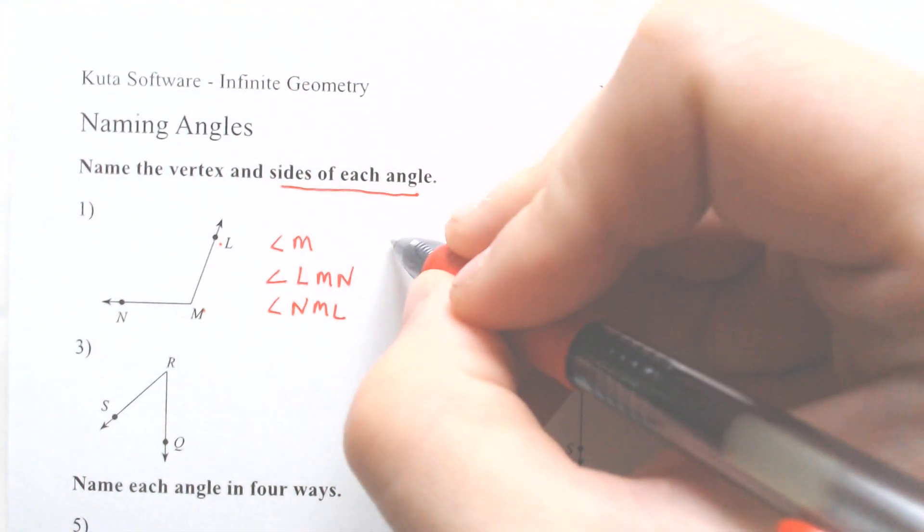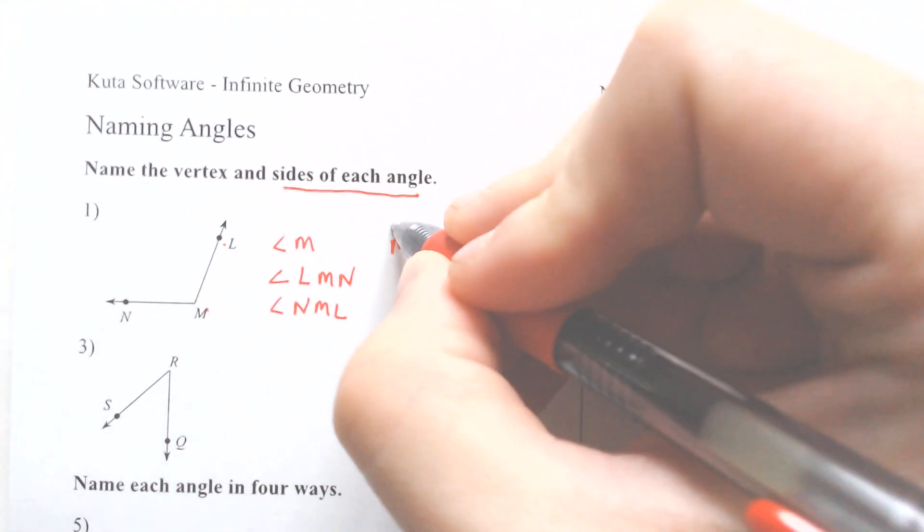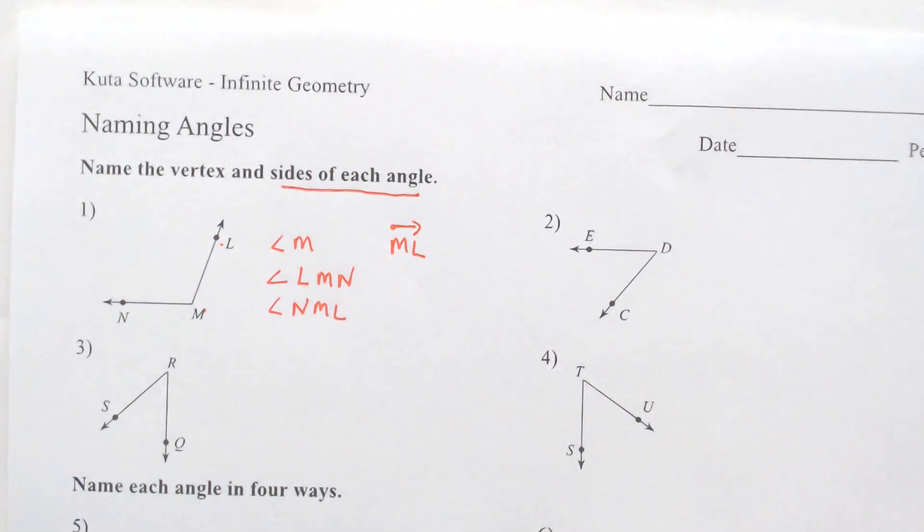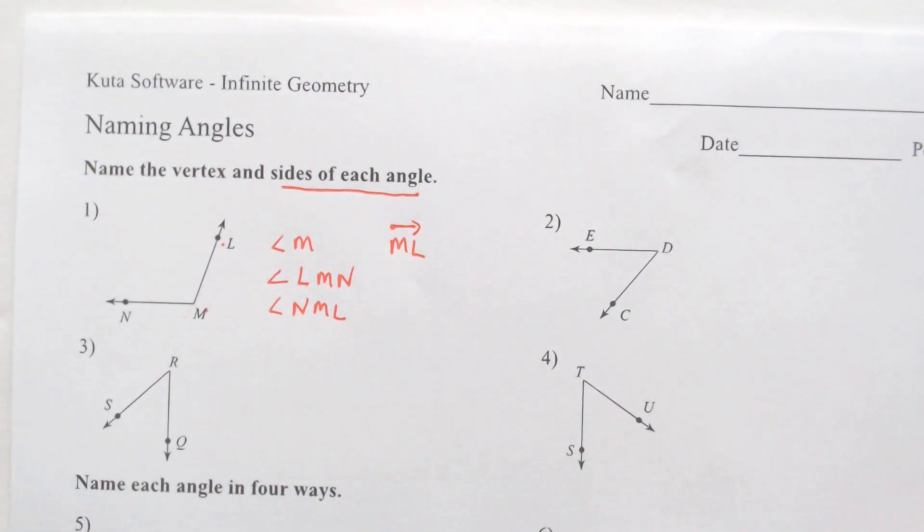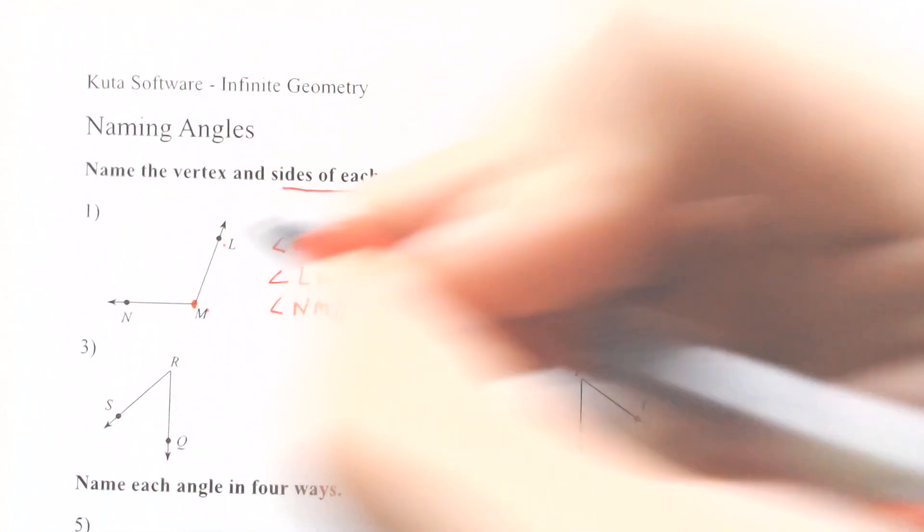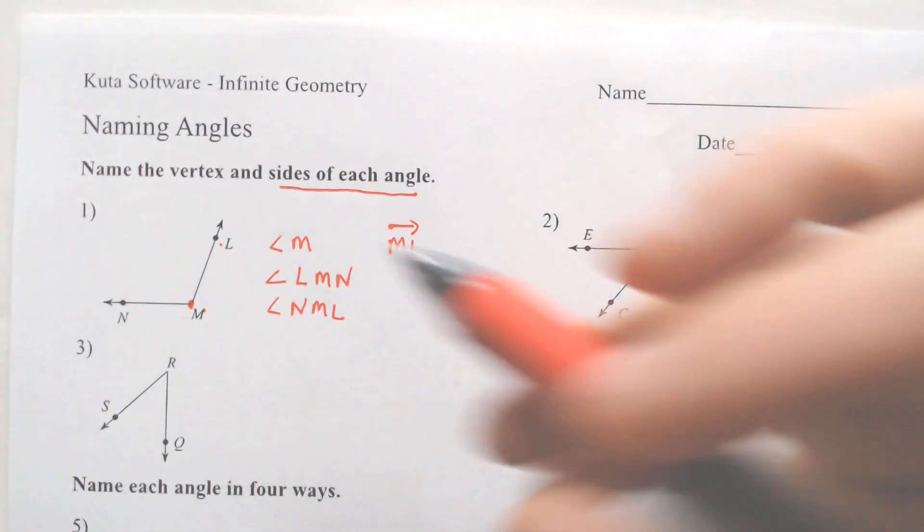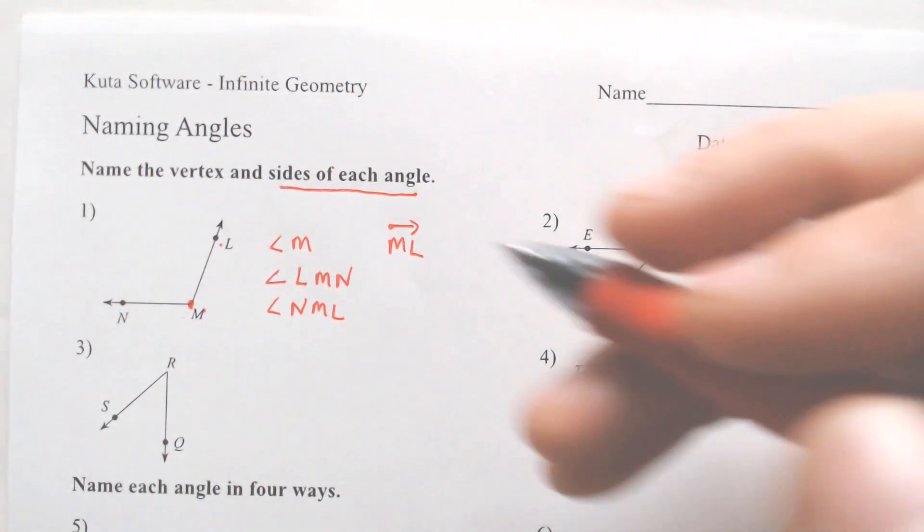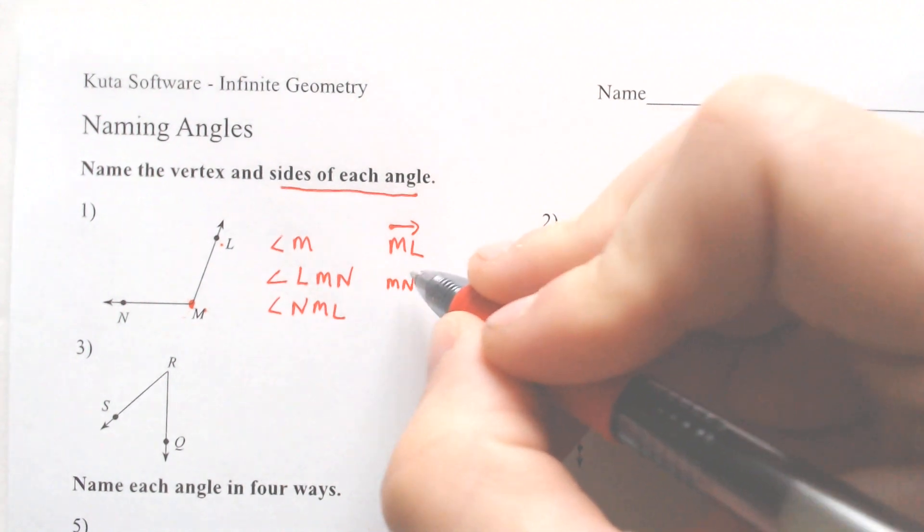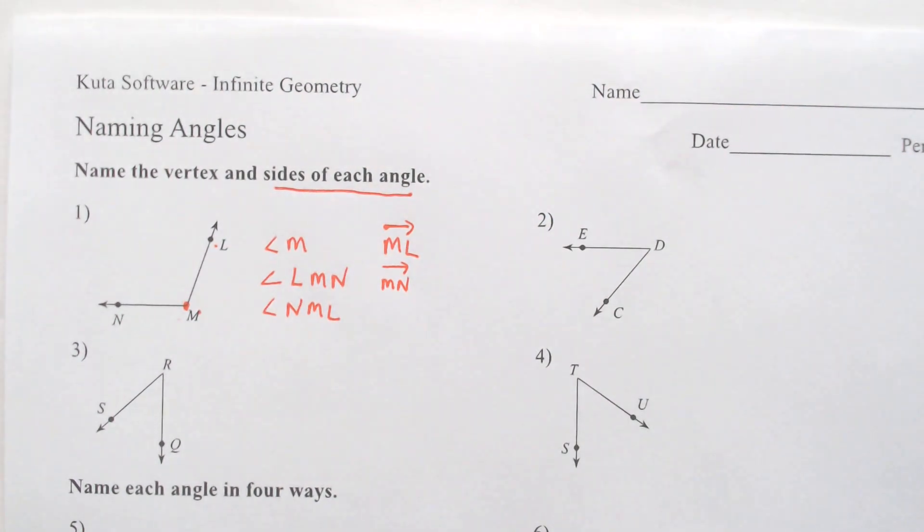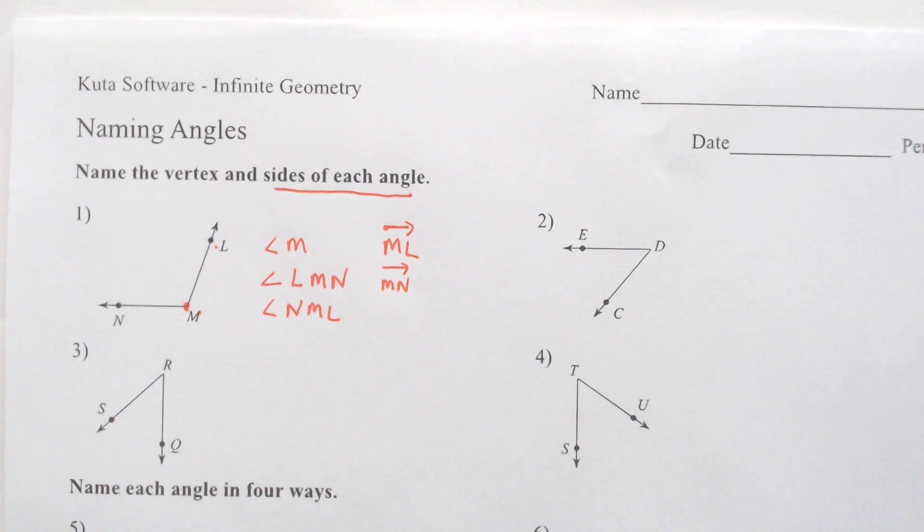It is also asking for the sides of each angle. Well, the sides would be the ray M L, so I put a dot from the M because that is where the dot of the angle is, and the arrow above the L because that is the direction of the ray, and the ray M N, but that's not the main point of this video.